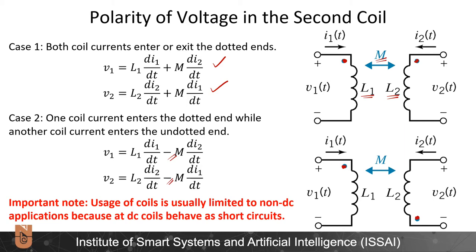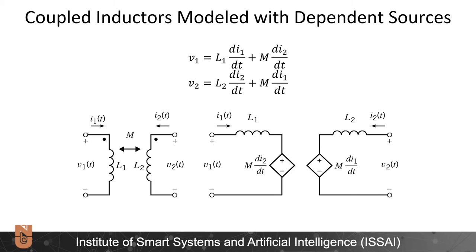An important note: usage of coils is usually limited to non-DC applications, because at DC coils behave as short circuits and we cannot speak about mutual inductance and coupled inductors. Coupled inductors are more complicated than elements we have studied before, but their circuit equations are linear, and therefore these elements can be represented using the tools of linear circuit theory.